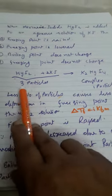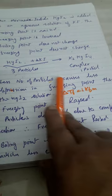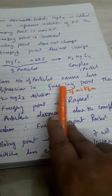So see here, three particles we are using and only one particle we are gaining. So less number of particles causes less depression in freezing point.